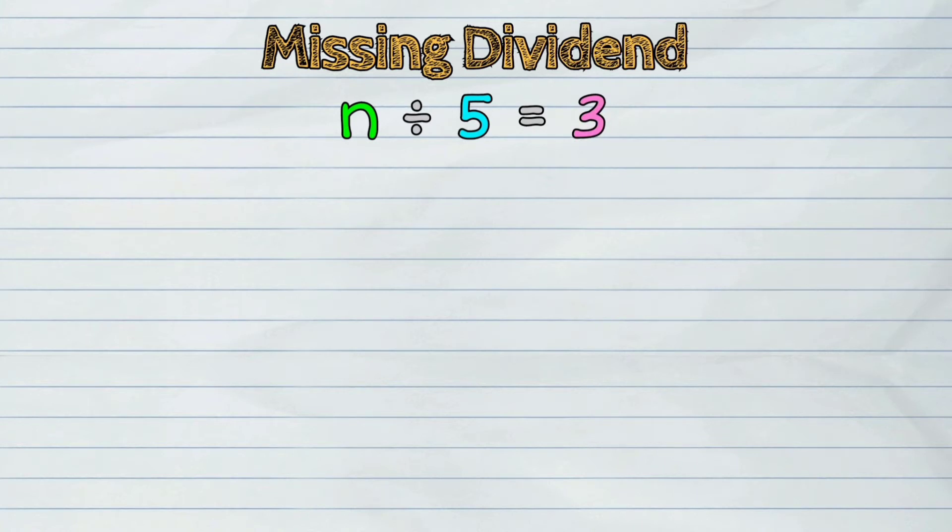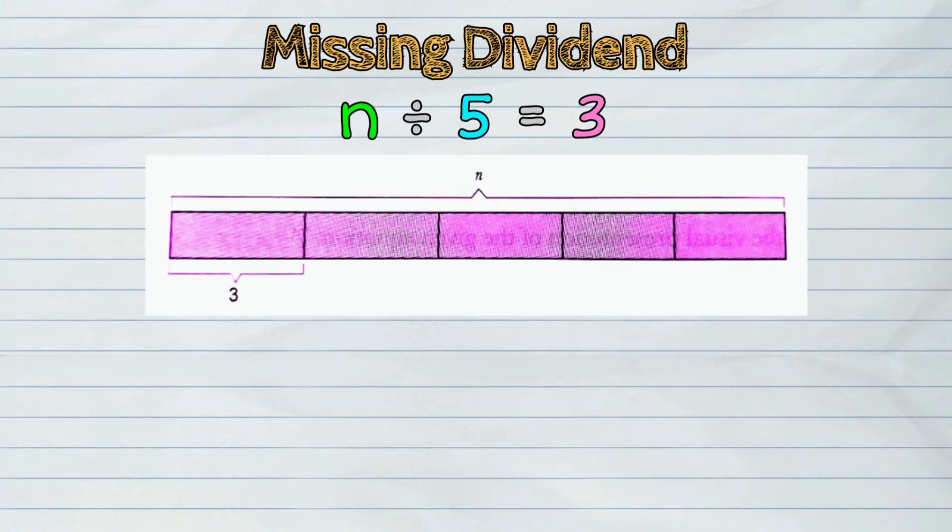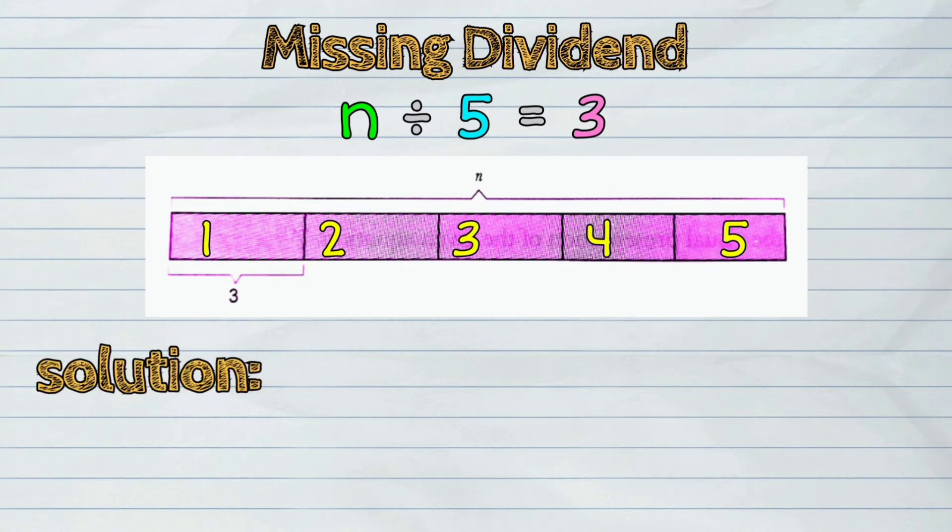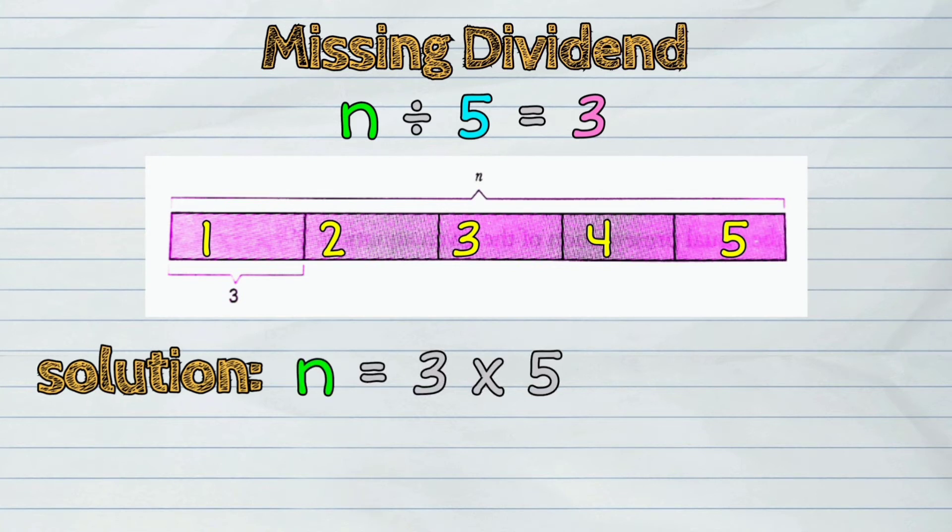Let us take a look at the visual representation of the given equation. You will notice that n can be obtained by multiplying the number 3 by 5. Here is the solution: n equals 3 times 5. The answer is 15.